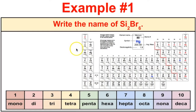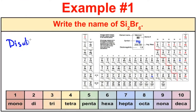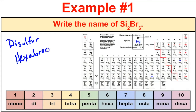Let's apply these rules. First example: write the name of S2Br6. We have two non-metals, so it's type 3 binary. The prefix for 2 is di, giving disulfur. Then we have 6 bromides — the prefix for 6 is hexa — giving hexabromide. So the name is disulfur hexabromide.